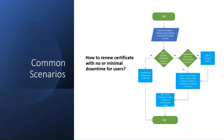To renew an expiring certificate with minimal downtime, you have to first create a new certificate in Azure portal with an overlapping date. If the application can automatically roll over a certificate, set the new one to active. If it can only handle one certificate at a time, pick a downtime interval to upload and activate the new certificate before the old one expires. If the application can handle more than one signing certificate, upload and activate the new one. Sign in to the application to ensure it works correctly.